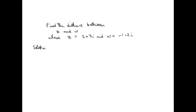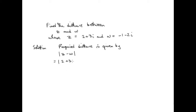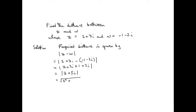So let's look at the solution. The required distance is given by the modulus of z minus w. That's the modulus of (2 plus 3i) minus (negative 1 minus 2i), which equals 2 plus 3i plus 1 plus 2i. The real part is 2 plus 1 = 3, and the imaginary part is 3i plus 2i = 5i. The modulus is the square root of the real part squared plus the imaginary part squared, so it's the square root of 9 plus 25, which is the square root of 34.